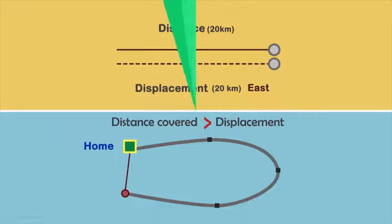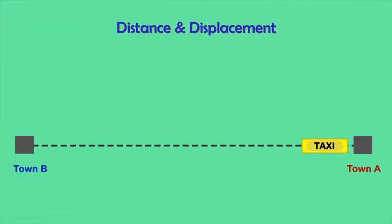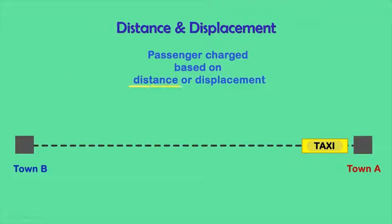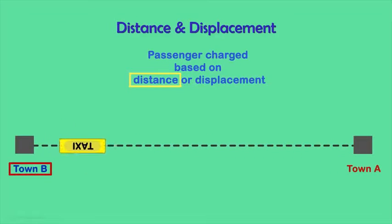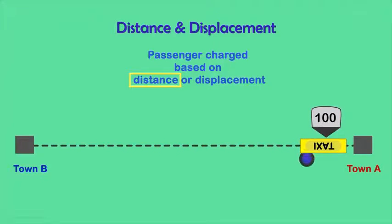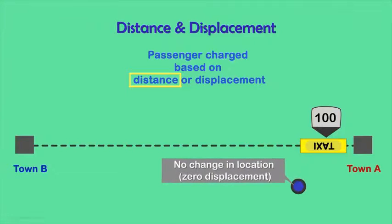If you've really understood the difference between distance and displacement, you should be able to answer the next question. When a passenger travels by taxi, is he charged based on the distance or displacement? Taxis charge passengers based on distance. If you go to the neighboring town and return in the same taxi, the taxi meter shows you the charge for the entire round trip. If you now try to explain to the taxi driver that you have had no resultant change in your location and hence you must pay nothing, it will not impress him much.